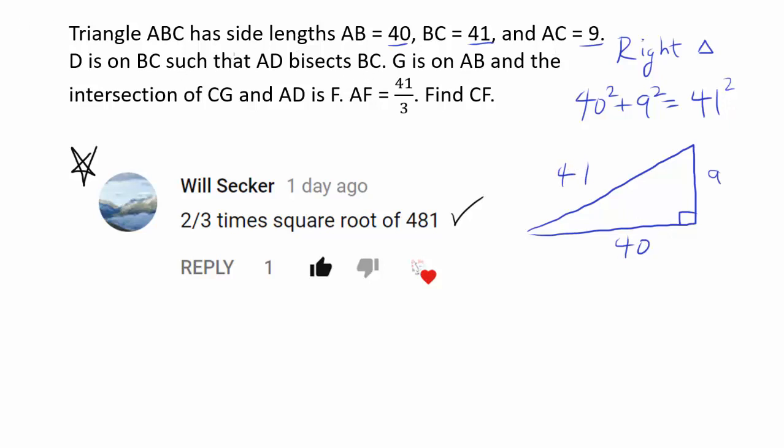And we know D is on BC. So let me label the sides first. We know AC is 9, AB is 40, and BC is 41. And we want to plot D on BC such that AD bisects BC. So you're bisecting it.